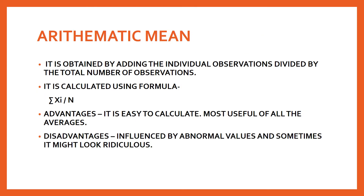The arithmetic mean is obtained by adding the individual observations and then dividing by the total number of observations. It is the simplest of the three measures. The formula is: mean = Σxi / n, where Σ is the sum, xi is the individual observation, and n is the total number of observations. Advantages: it is easy to calculate - just add all values and divide by the total - and it is the most useful of all averages.